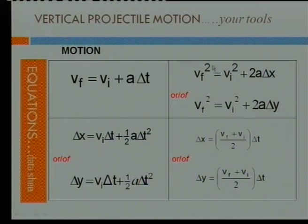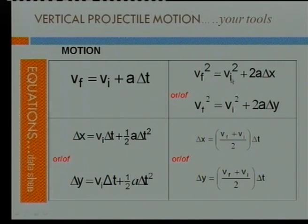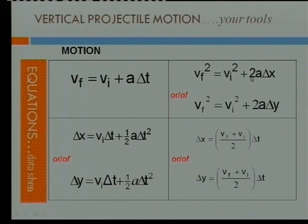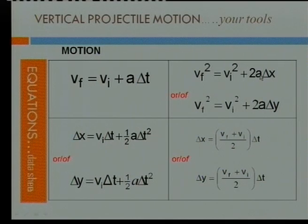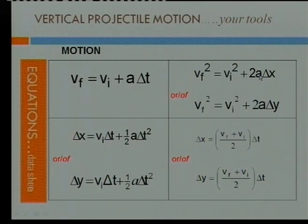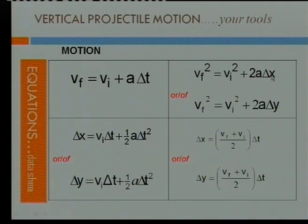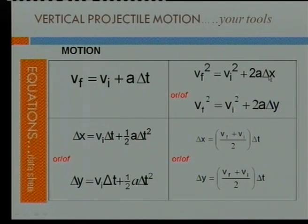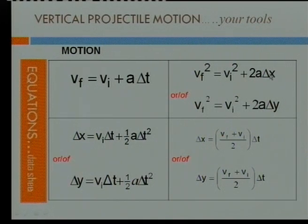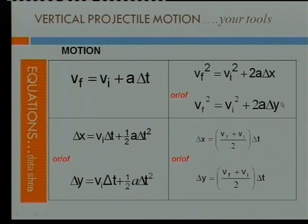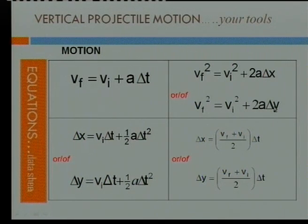Then we have equation number two, the velocity squared. The final velocity squared is equal to the initial velocity squared, and then plus two times a or g in this case, because it is a projectile under the influence of gravity, and delta x is the displacement, of course. But this we use for horizontal motion, and we use delta y for vertical motion.